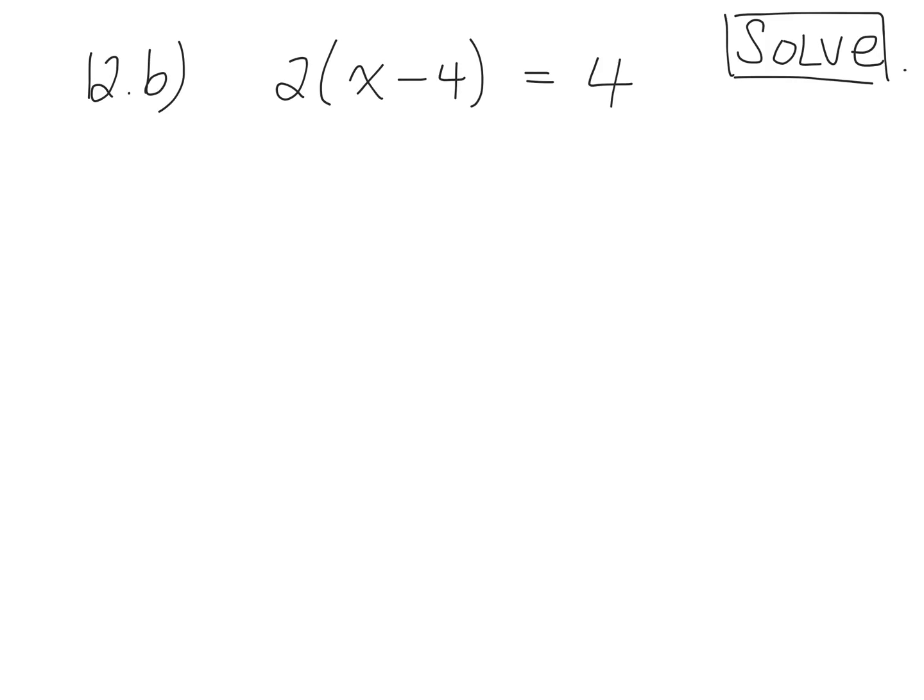Okay, so we're looking at this question. We have 2 multiplied by x take away 4. What do brackets mean? Can I solve what's in the bracket? Can I simplify x take away 4? Why not? They're not like terms. Good.